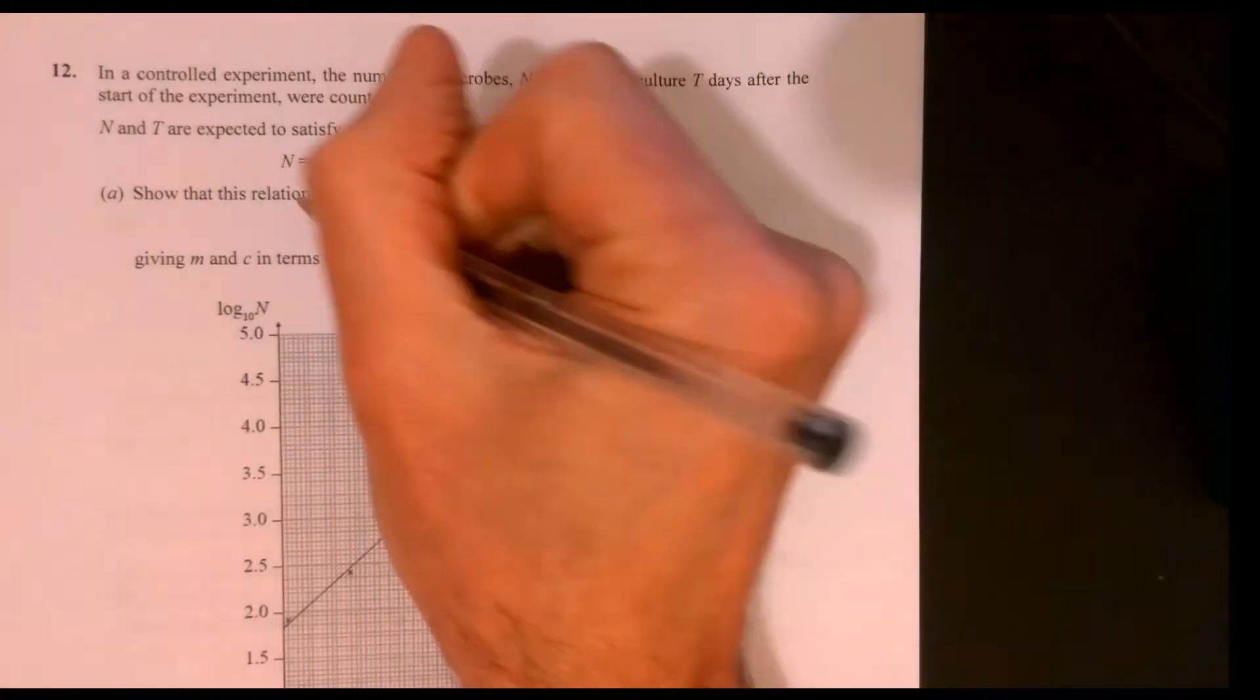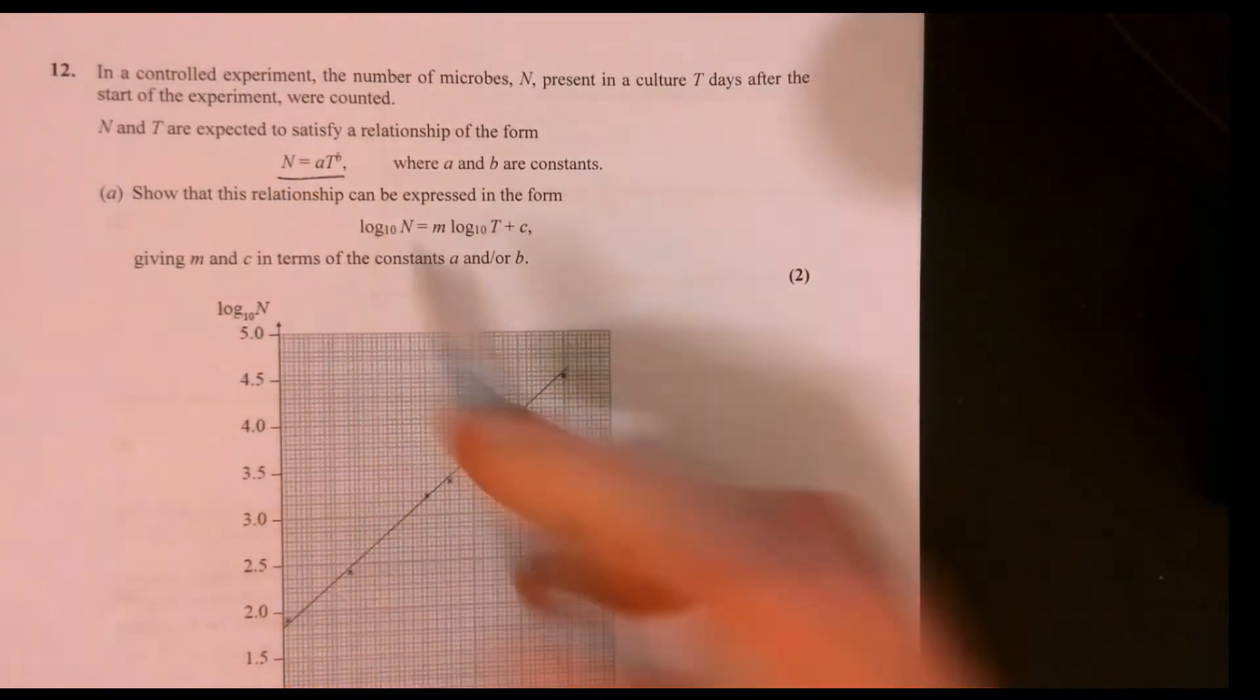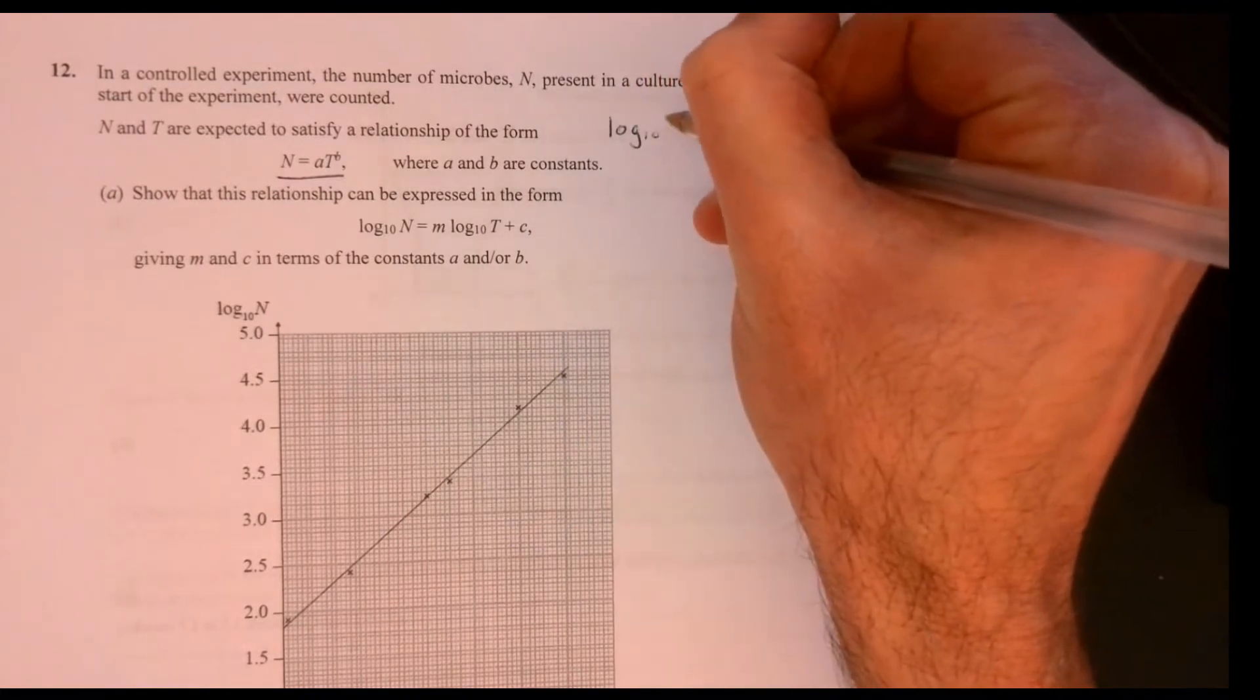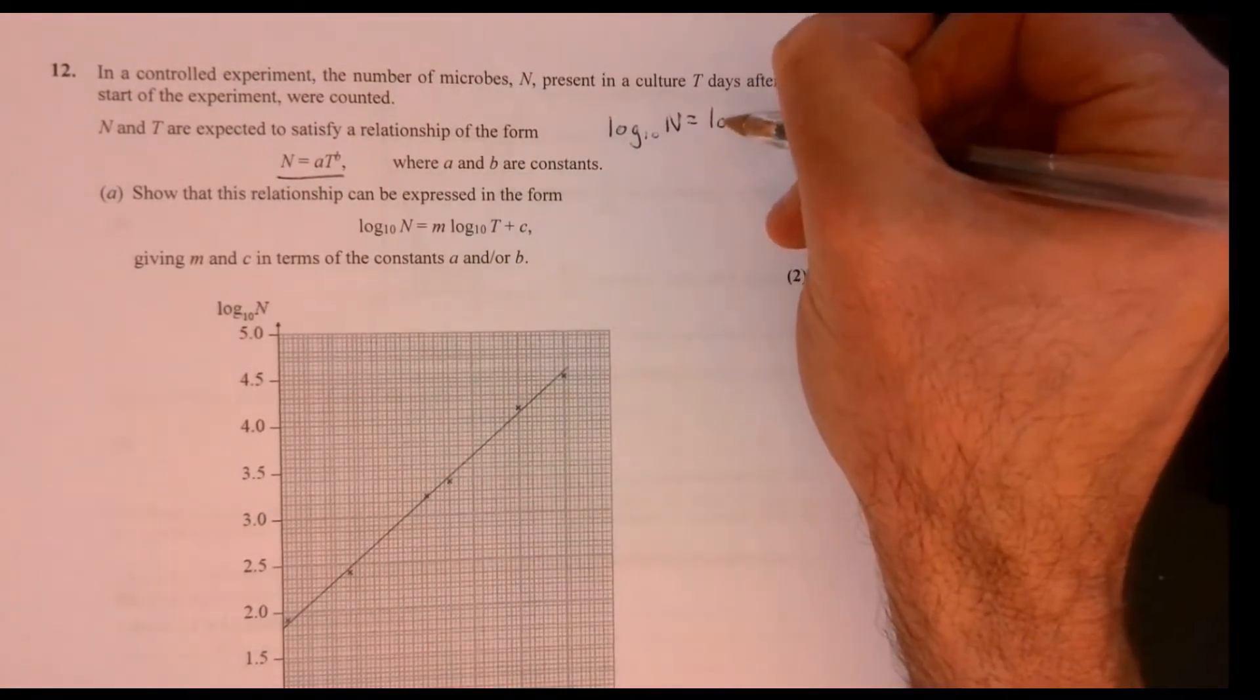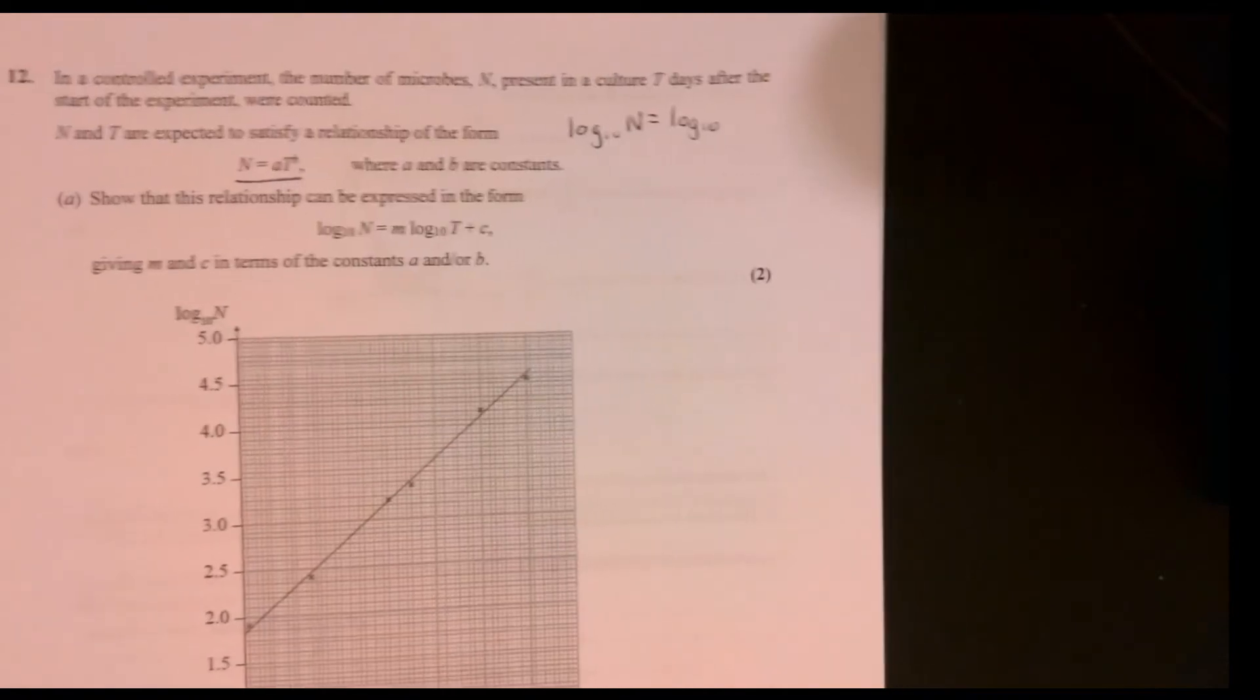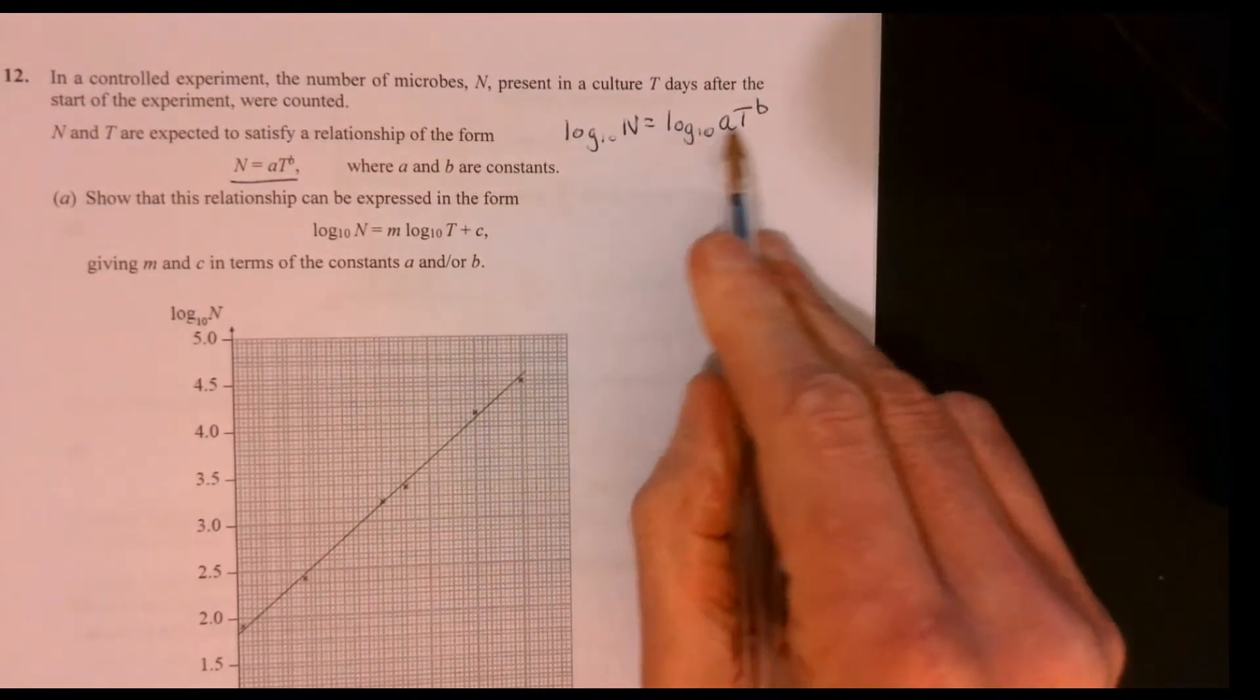Question 12. Looks scary, this question. First of all, let's think about how we've got to here. What we're going to do is take log base 10 of both sides. That's all we're doing. Looks horrid, but it's not so bad. And just do exactly the same to the other side. Let's think about what happens here.